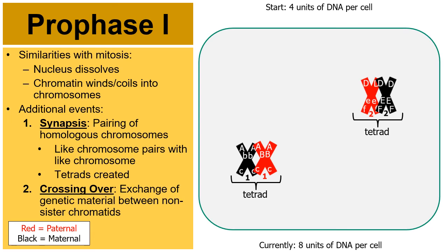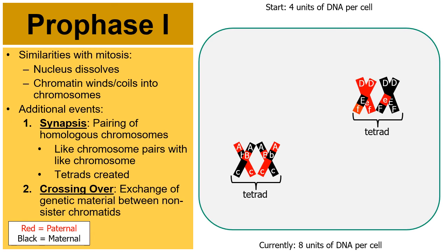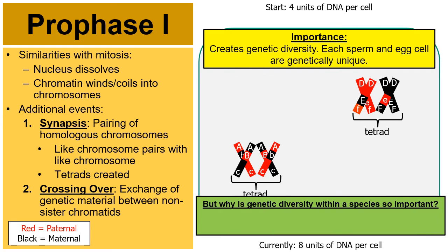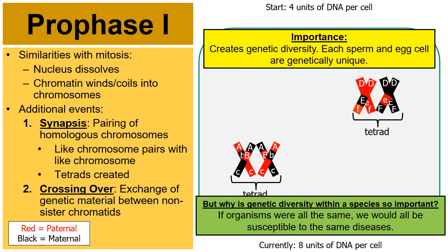Watch the chromosomes of tetrad 1 — portions of maternal and paternal chromosomes broke off and reattached with one another. Crossing over helps to recombine and mix up the genetic material of chromosomes. This creates a lot of the genetic diversity found within a species and helps ensure that every sperm and egg are genetically unique. This is important because it helps prevent species from extinction — if all organisms were the same, we would all be susceptible to the same diseases and harmful influences.